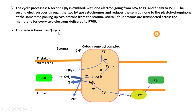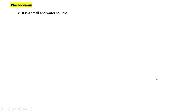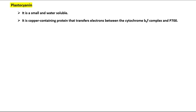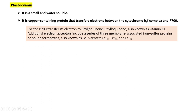Plastocyanin is a small, water-soluble, copper-containing protein that transfers electrons between the cytochrome B6F complex and P700. Excited P700 transfers its electron to phylloquinone, also known as vitamin K1.